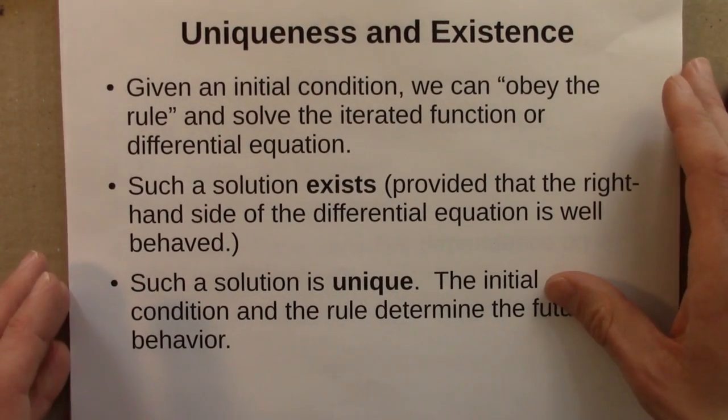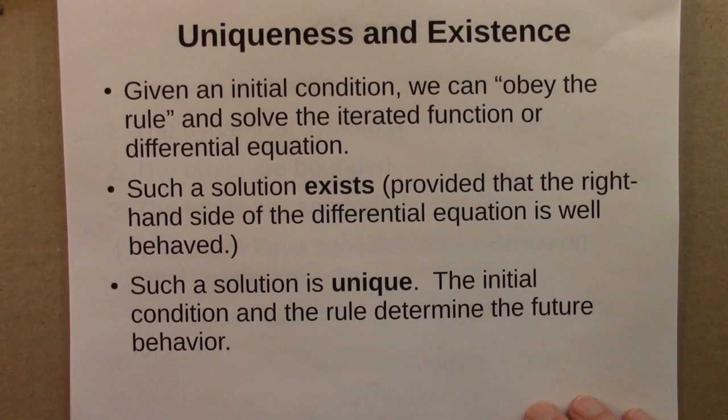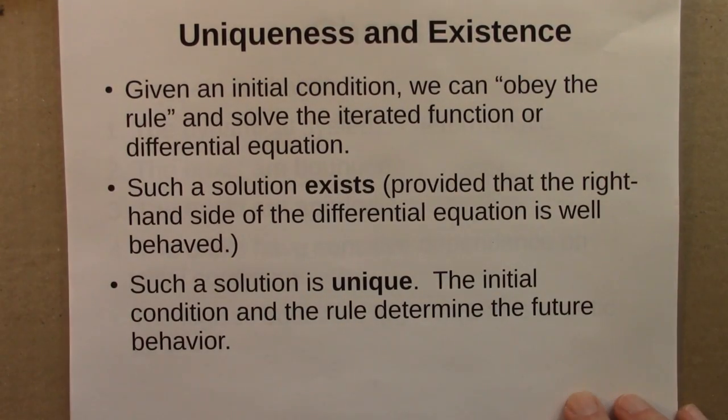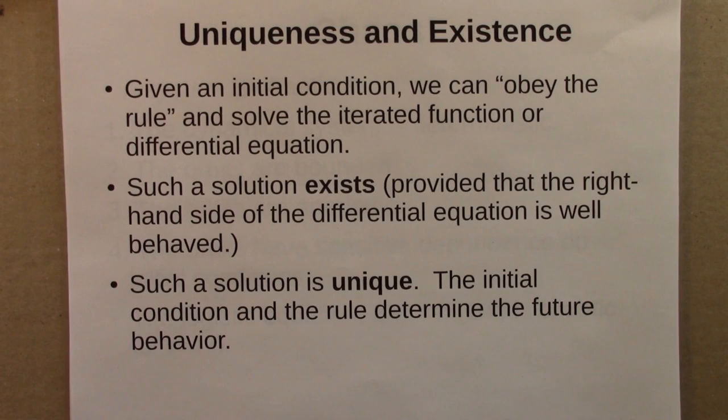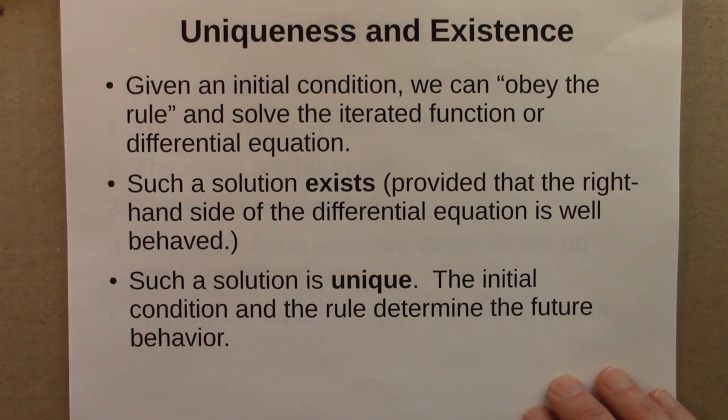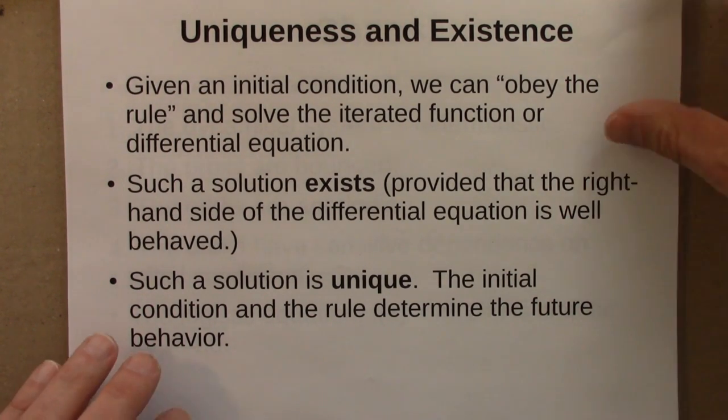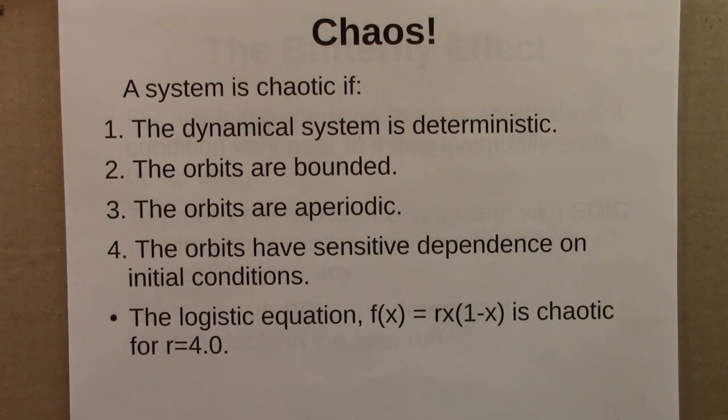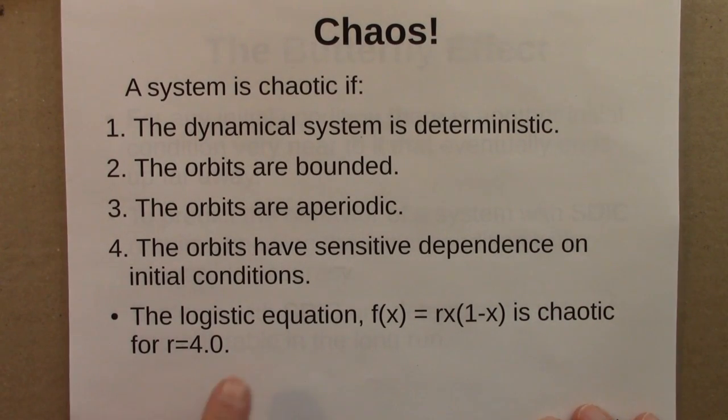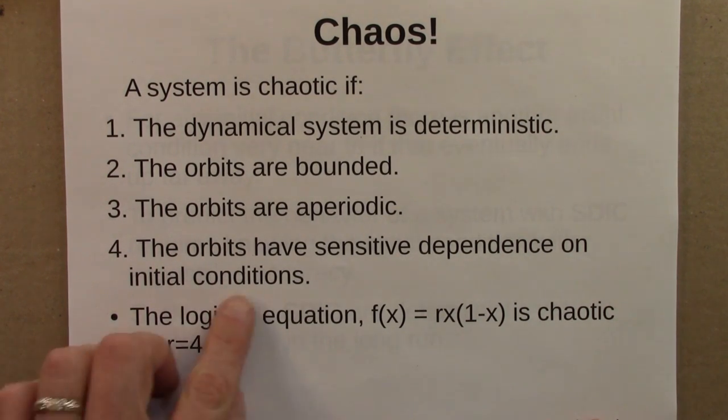At this point, it almost sounds like the problem has been solved. We have these equations and we know there's a solution and we know the solution exists, we know it's unique, we have a method for solving it. It should be boring from this point. But what's interesting about dynamical systems is that something that sounds boring, an iterated function, turns out to have all these interesting surprises in it. One of the first surprises we saw was chaos, chaotic behavior. We saw it in a number of different systems. But we saw it first for the logistic equation with R equals 4.0. A system is chaotic in the mathematical sense if it has the following properties: the dynamical system is deterministic, the orbits are bounded, aperiodic, and have sensitive dependence on initial conditions, the butterfly effect.